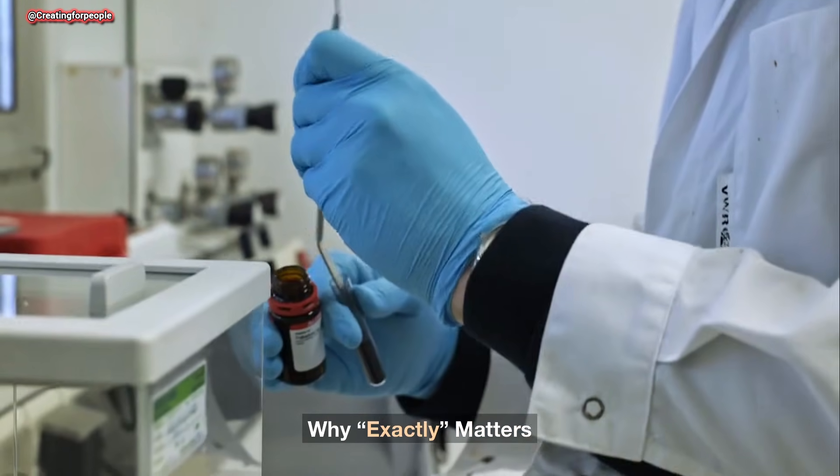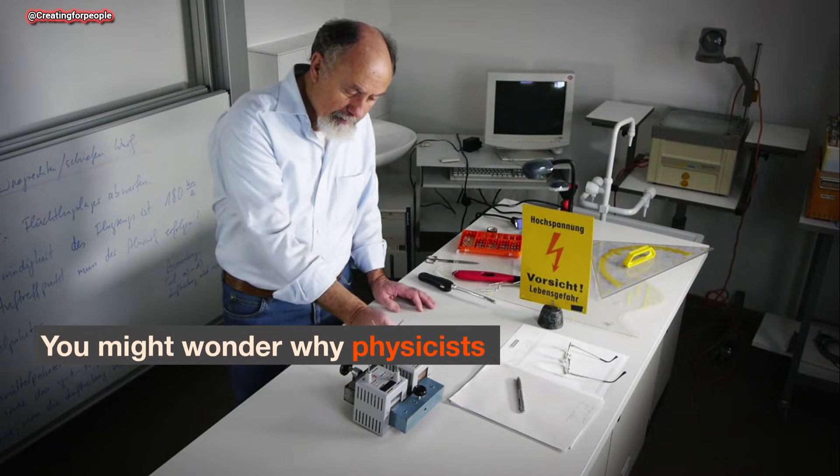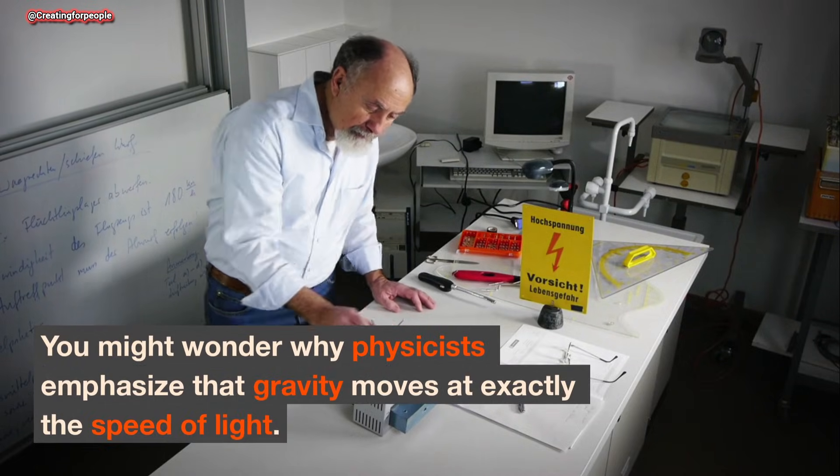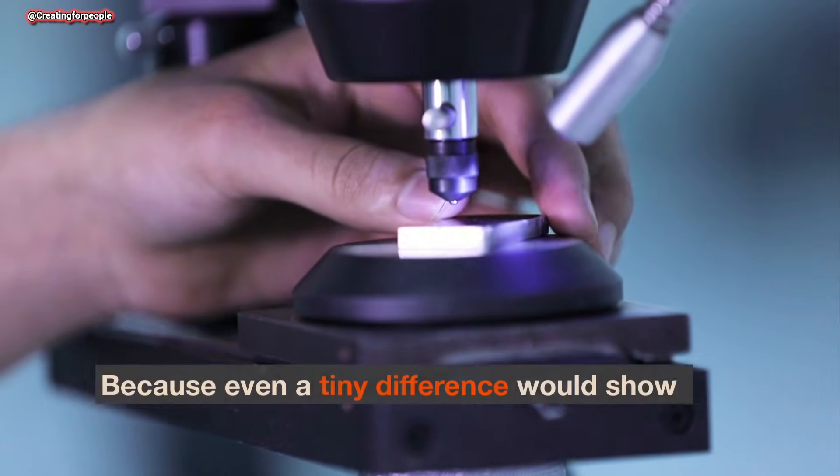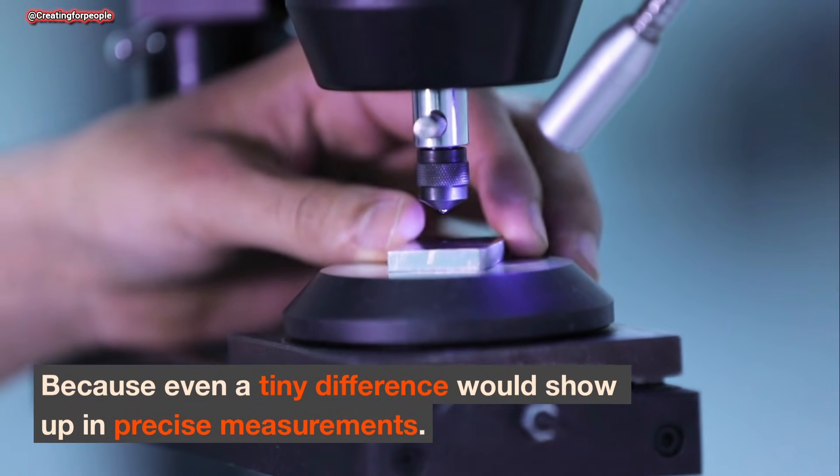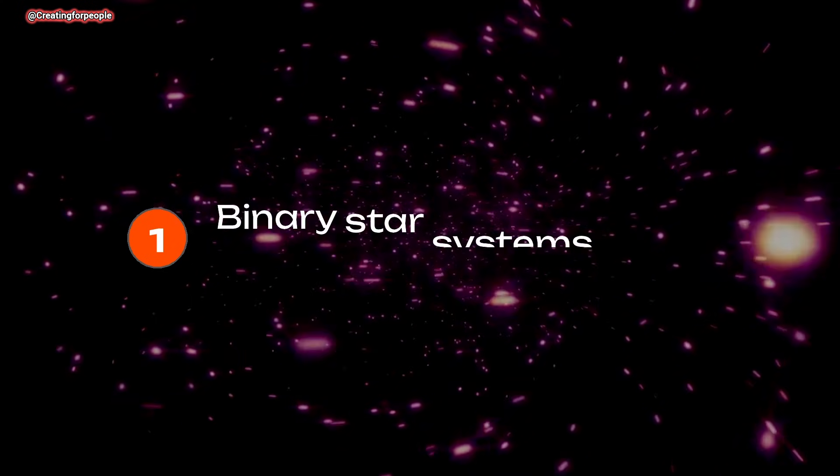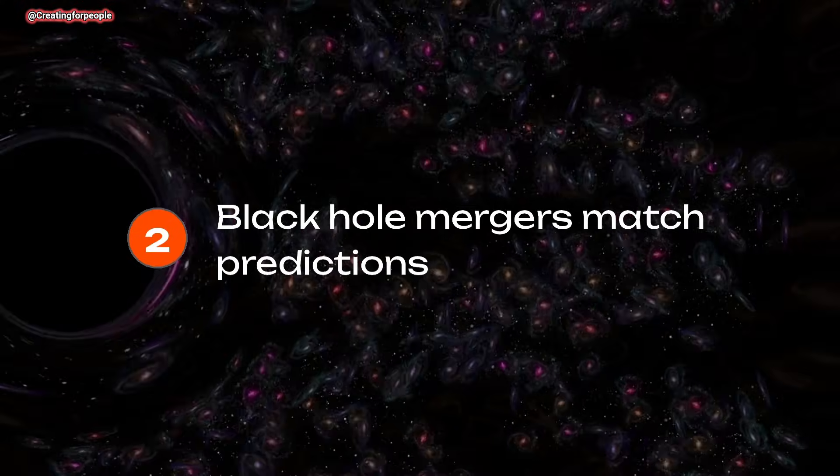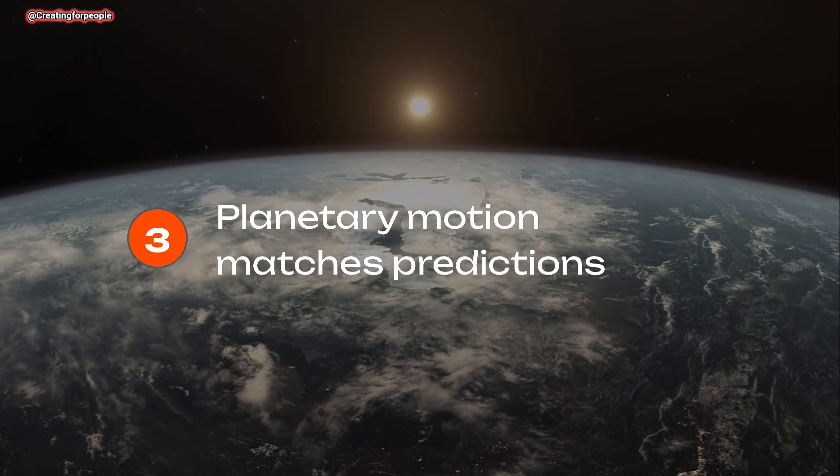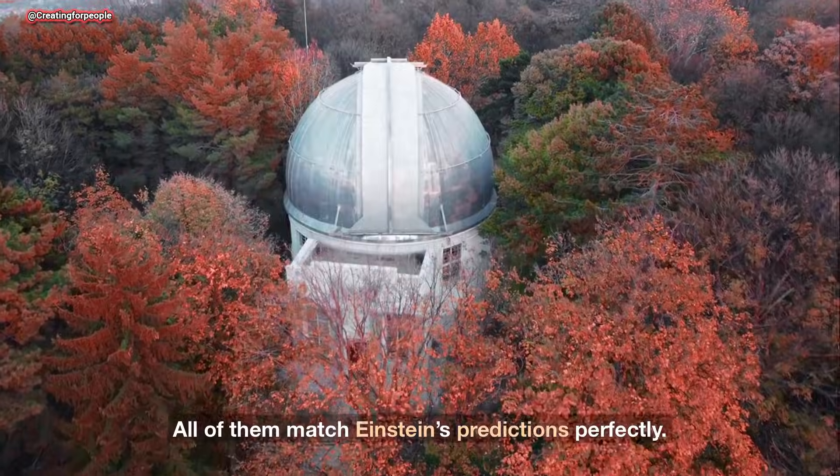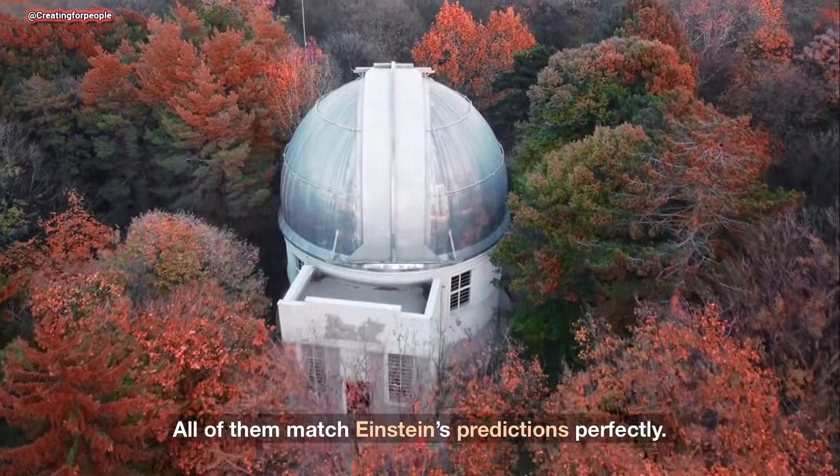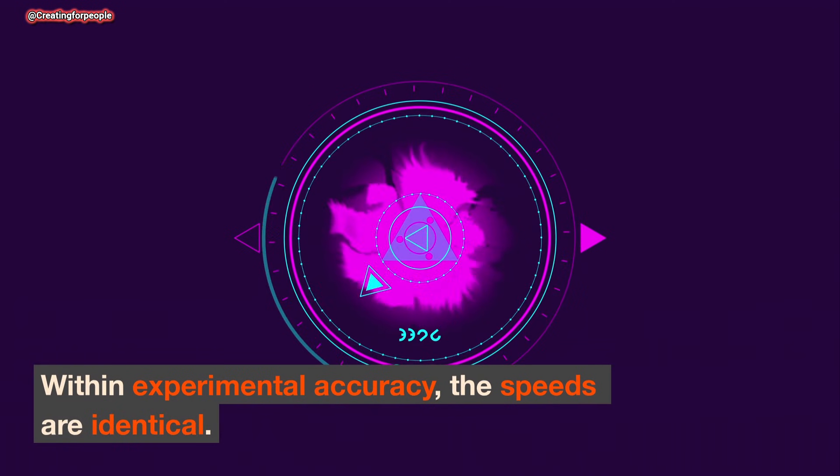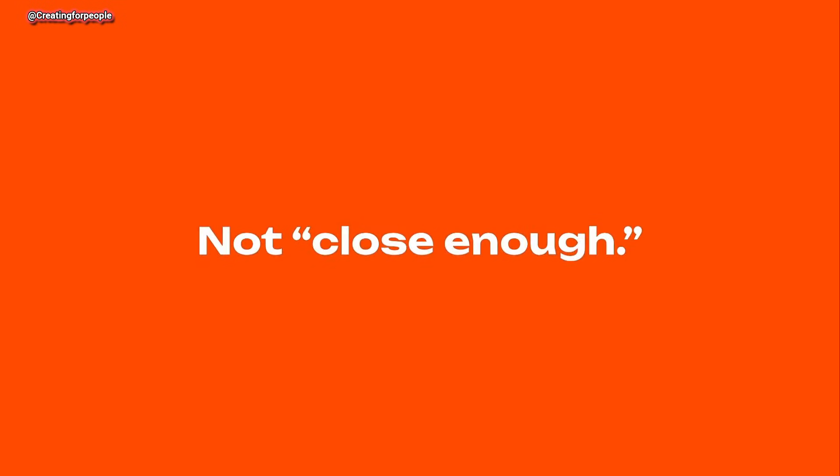Why exactly matters. You might wonder why physicists emphasize that gravity moves at exactly the speed of light, because even a tiny difference would show up in precise measurements. Binary star systems, black hole mergers, planetary motion—all of them match Einstein's predictions perfectly. Within experimental accuracy, the speeds are identical. Not approximately, not close enough. Exactly.